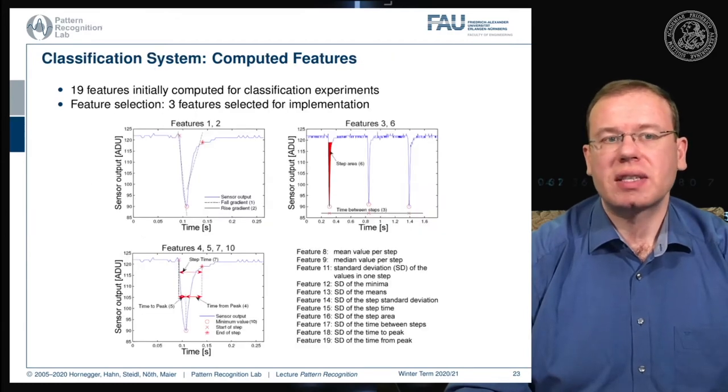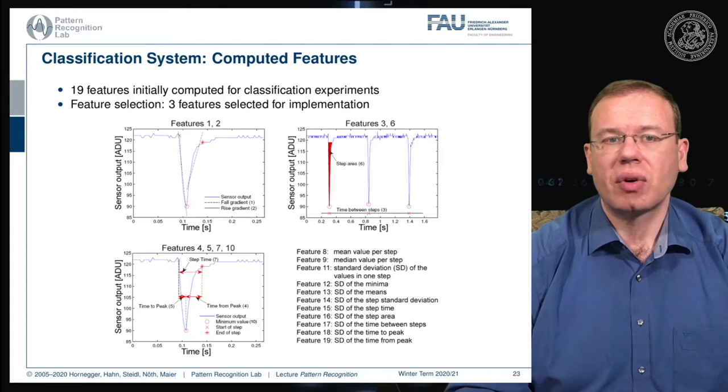With respect to features, there are 19 features that have been computed in this shoe for the classification experiments. In the end, only 3 features have been selected for implementation. The idea of these feature computations is essentially an analysis of the basis of the step signal and the change of the cushioning material.